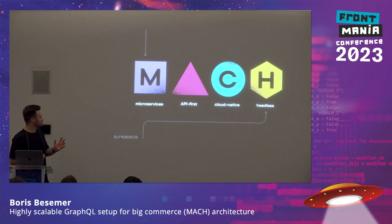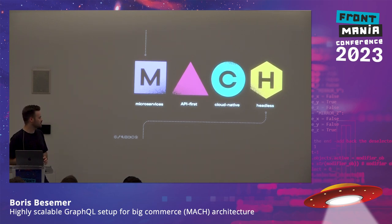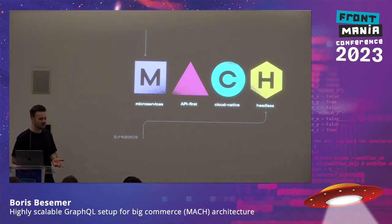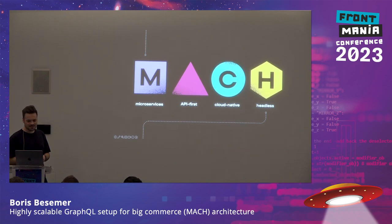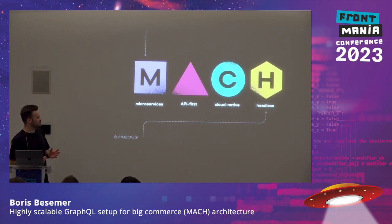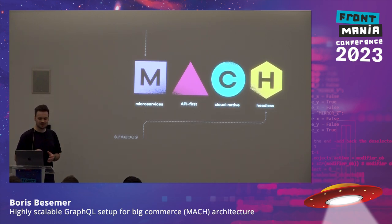It means that all of the services we use are based on a microservices architecture, enabling composability between services. It's API first, so instead of working with all kinds of different ways of communicating, each of these services is based on an API. All of those services are cloud native, meaning they should be easily scalable and flexible for surges in visitors — like a limited sneaker release where you need to scale up to hundreds of thousands of people. And headless means you have a bunch of APIs and you can create your own front-end experience around those components.